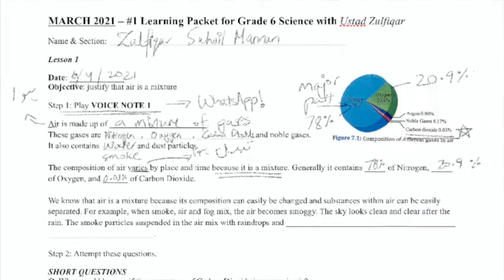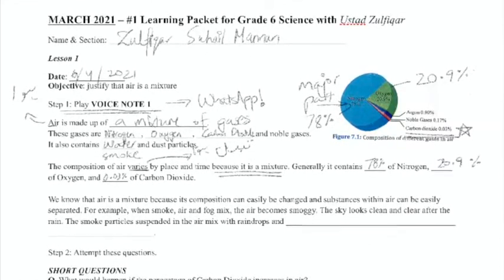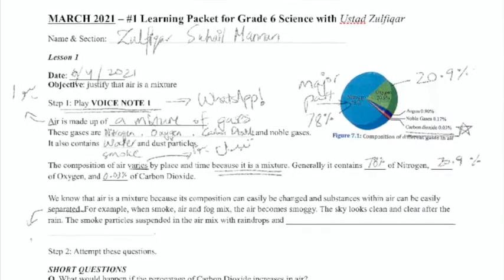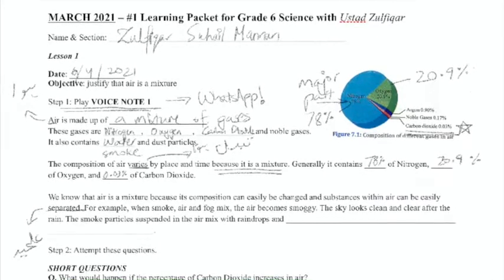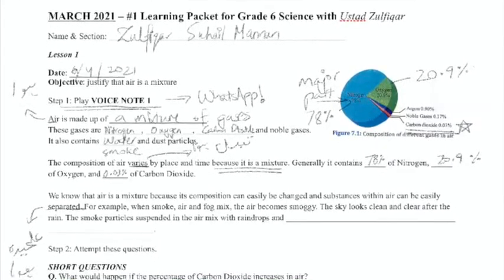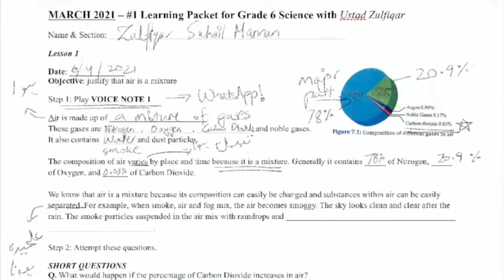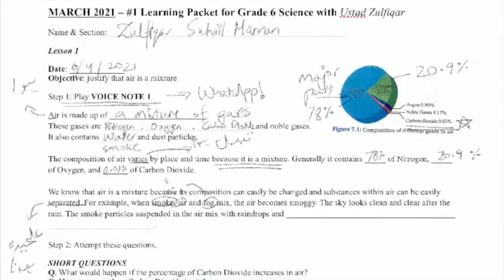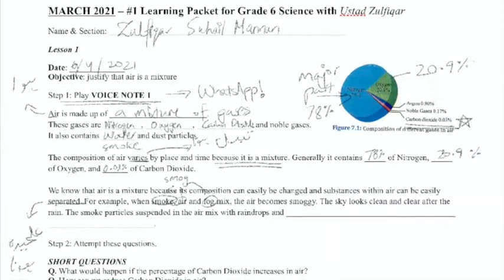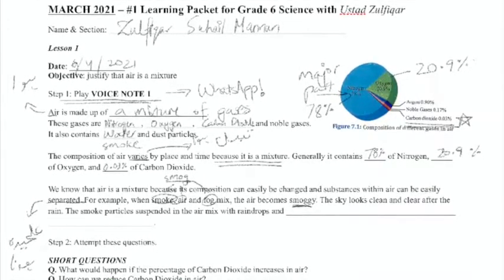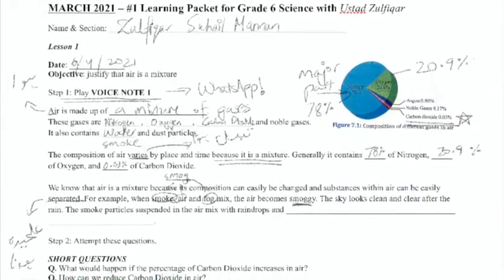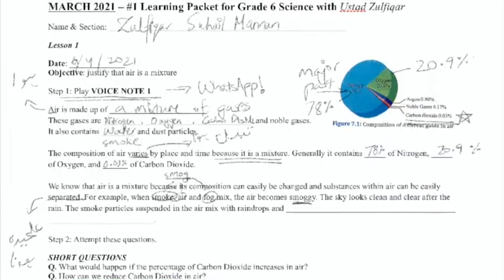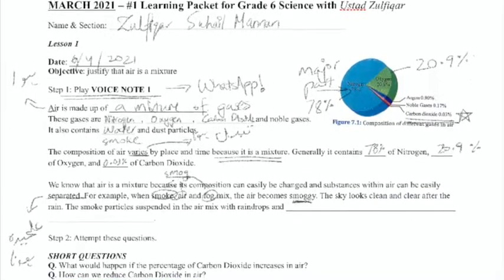Separated. Separated means that it can be separated very easily. For example, when smoke, air, and fog mix, they make smog. The air becomes smoggy. The sky looks clean and clear after the rain.